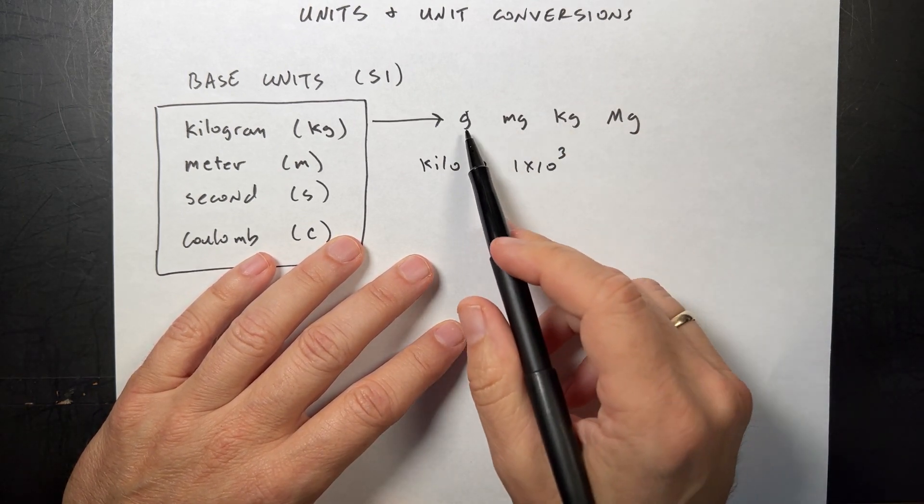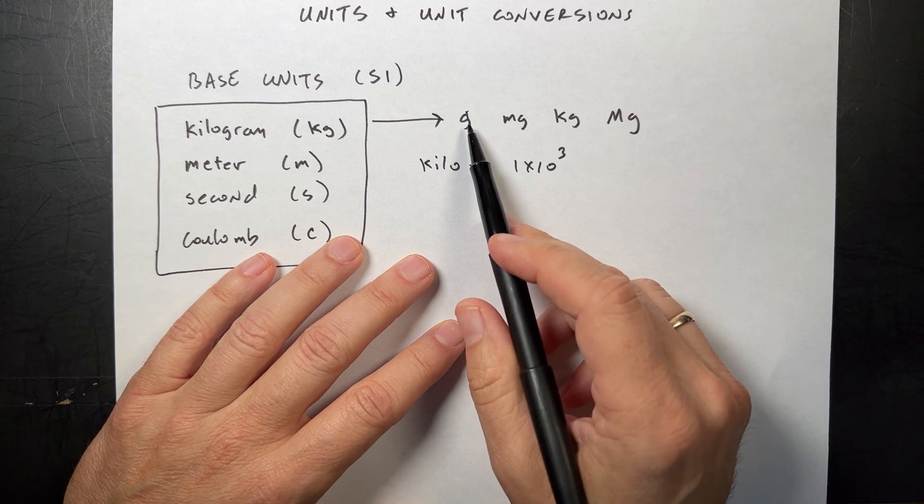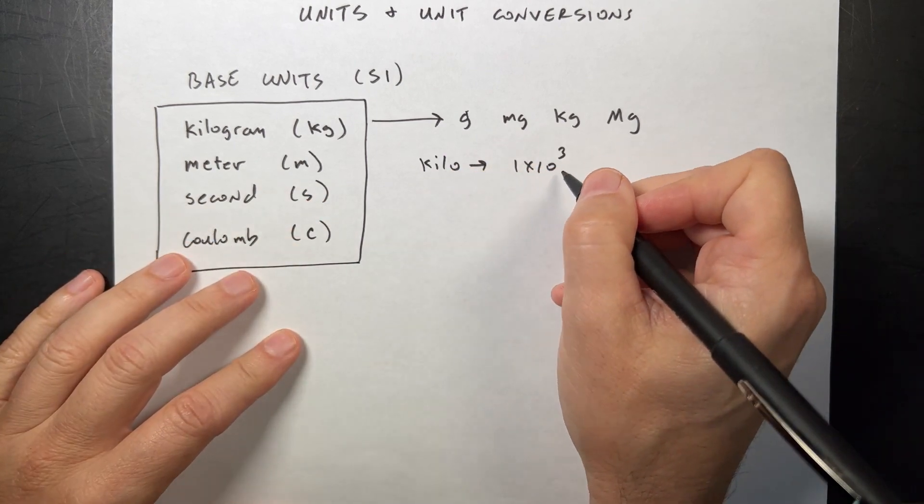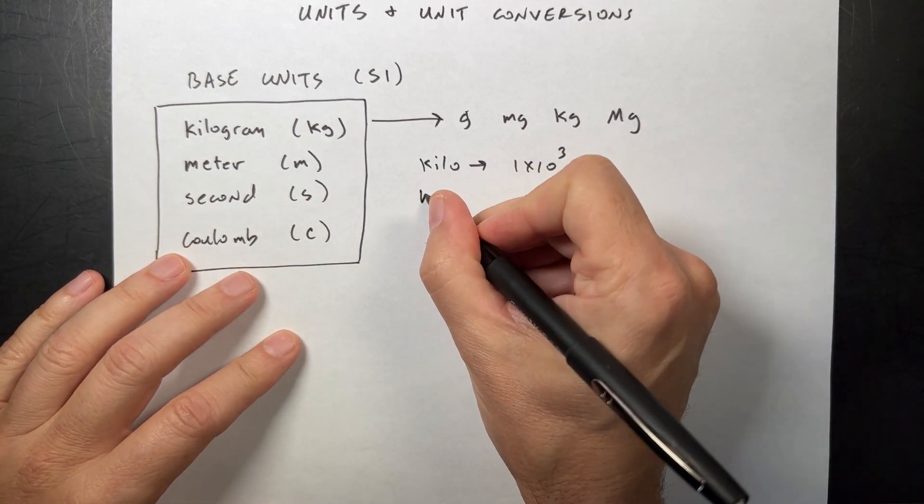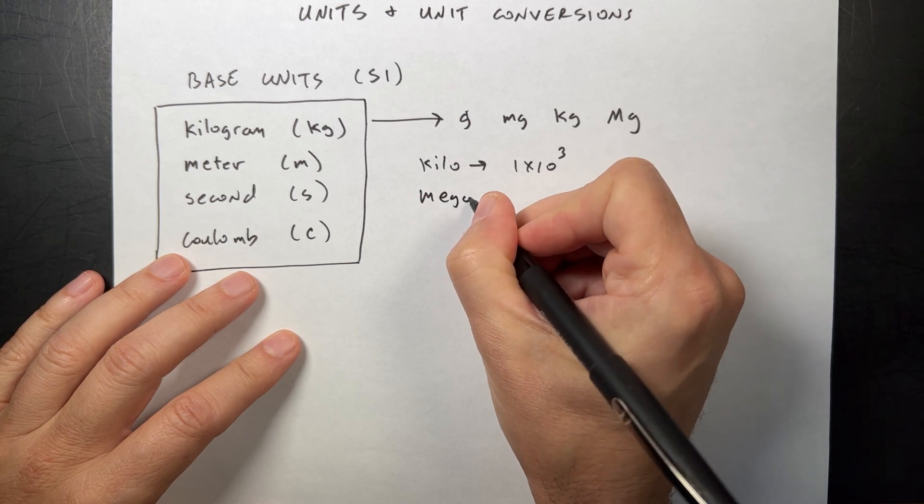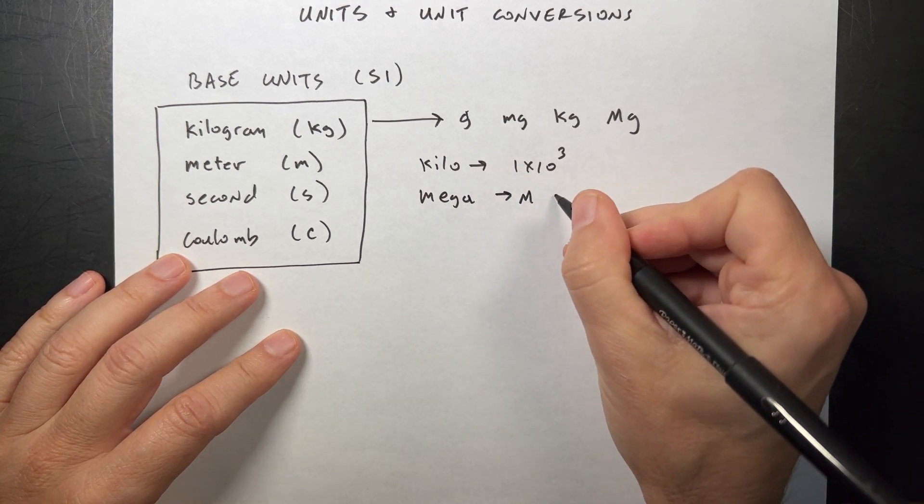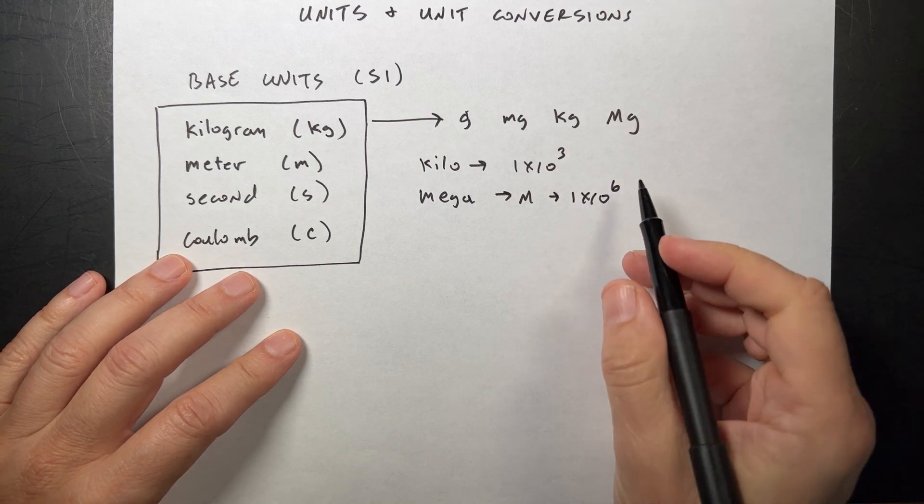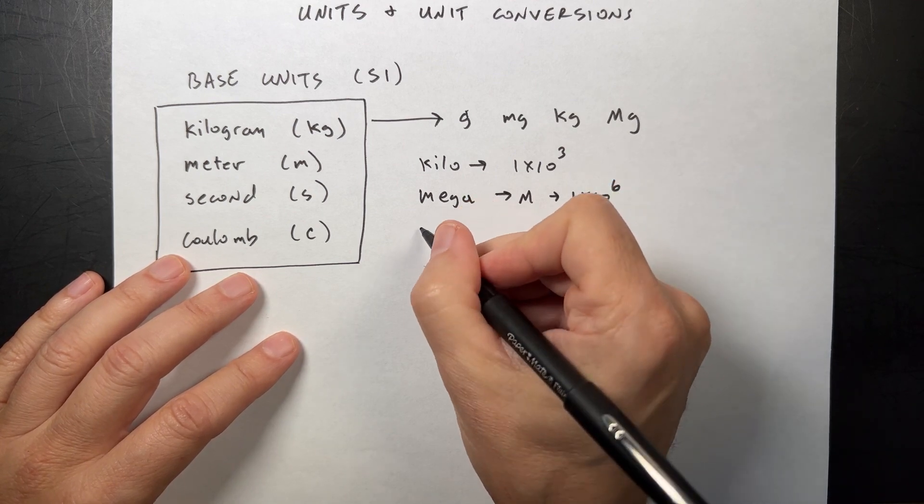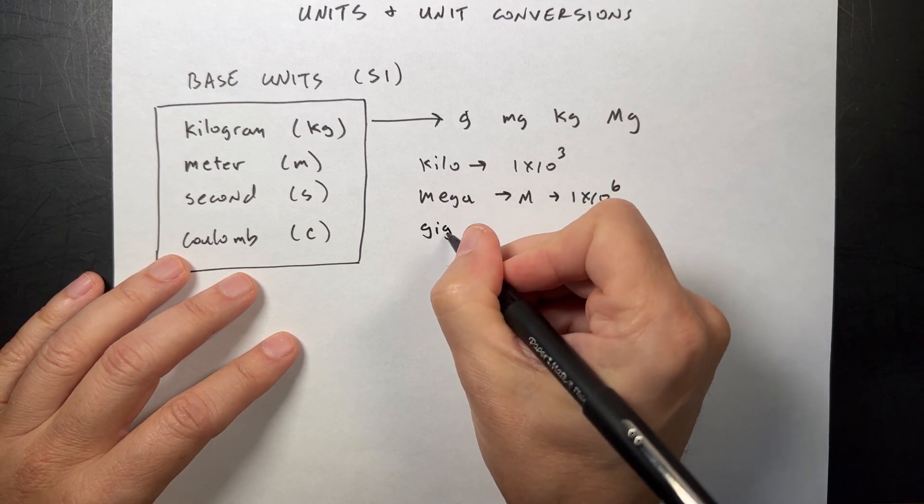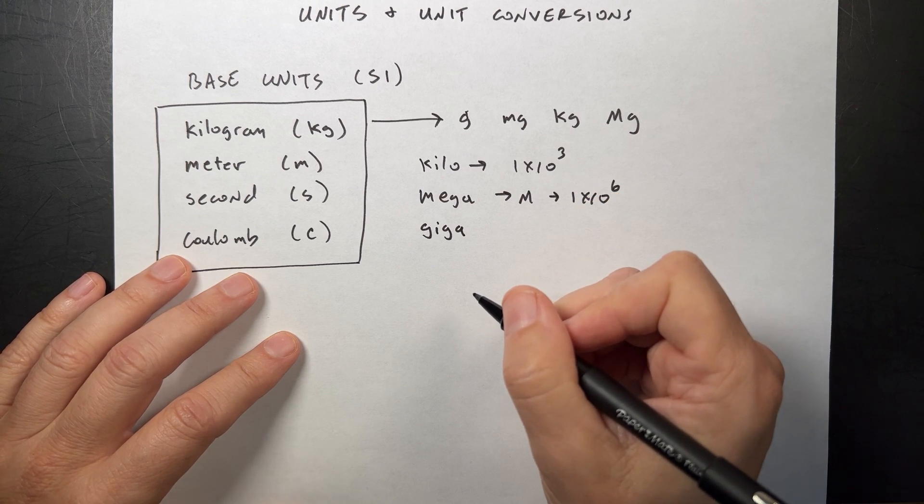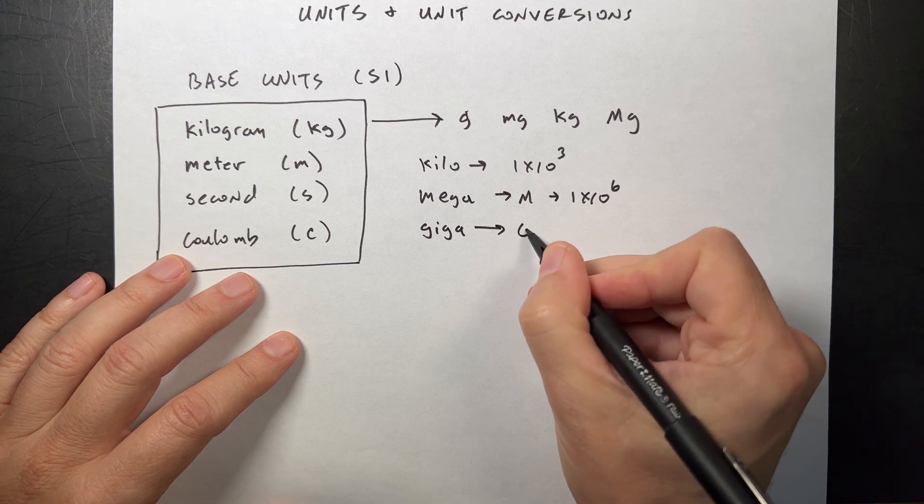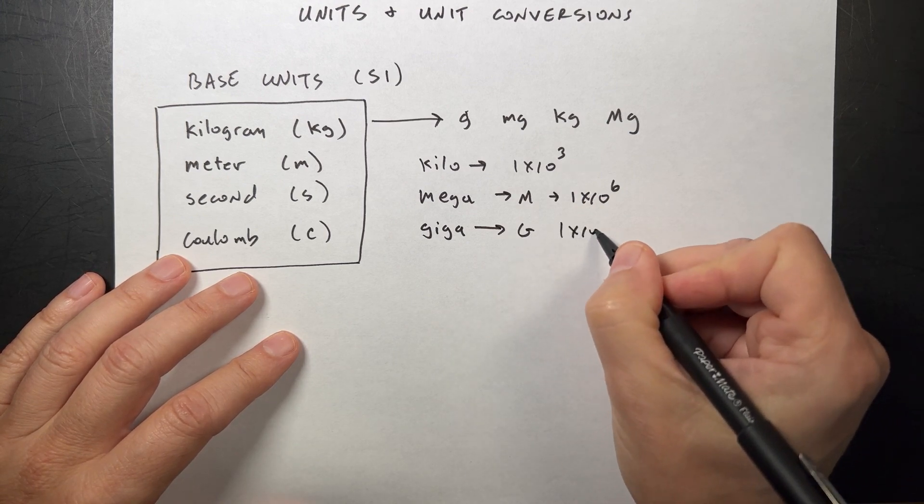Kilo really means one times ten to the third. So, one kilogram is one times ten to the third grams. Okay, that's what that means. And then we have another bigger unit, which would be the mega. And we'll also use this as just capital M. And that is one times ten to the sixth. That's a million times. Another one that we're going to have is the giga. Or if you watch Back to the Future, it's giga. I don't know if you remember that. If you haven't seen that movie, you're really going to like it. And it's usually capital G. And it's one times ten to the ninth.